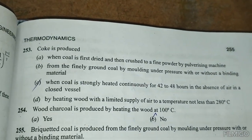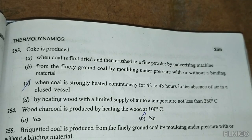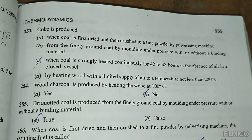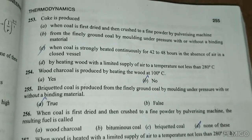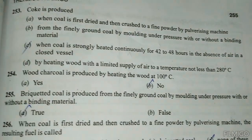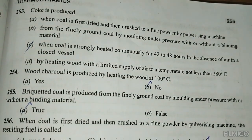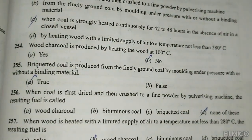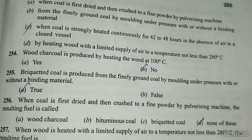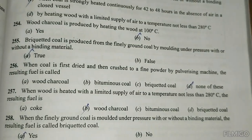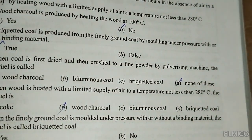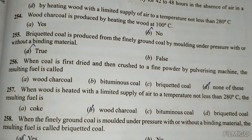Coke is produced when coal is strongly heated continuously for 42 to 48 hours in the absence of air in a closed vessel. Wood charcoal is produced by heating wood to not less than 280 degrees centigrade. When wood is heated with a limited supply of air at a temperature not less than 280 degrees centigrade, the resulting fuel is wood charcoal.